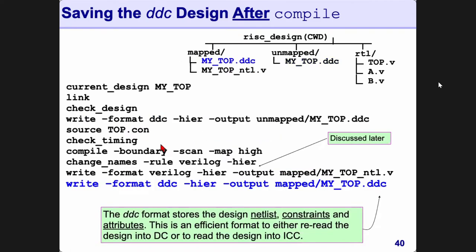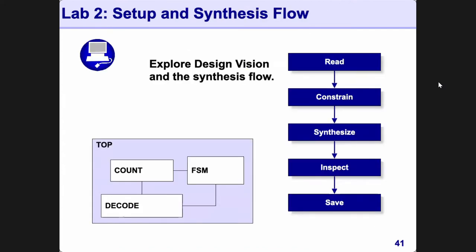After compile, you can also save as a DDC netlist using the same series of commands: write -format ddc -hierarchy -output filename.ddc. The -hierarchy flag means your entire design — which could consist of one block or hundreds of blocks — is saved into a single file. If you want to save in Verilog format, use -format verilog. After compile this will be a netlist, not RTL. The DDC file will also save any constraints and design attributes you have applied.